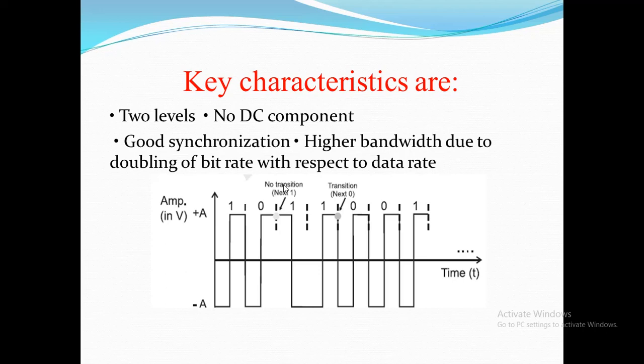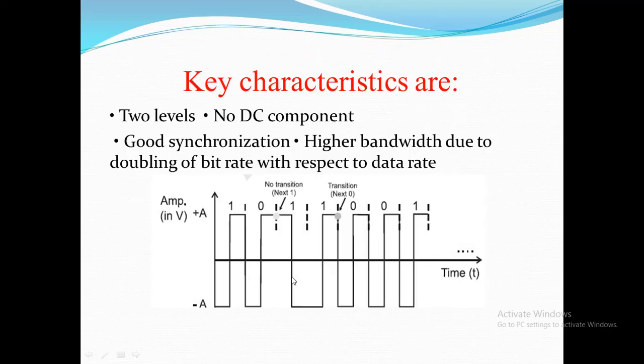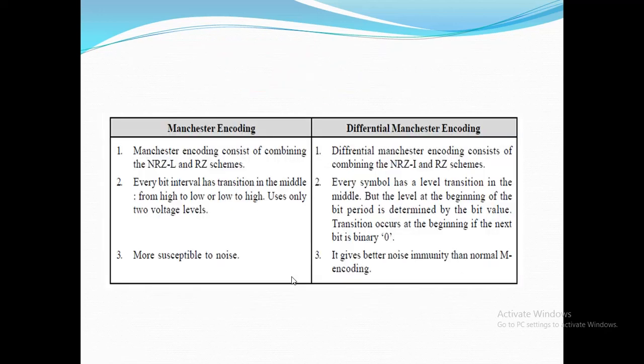Key characteristics of biphase encoding: two voltage levels are present, no DC component, good synchronization, but higher bandwidth is required due to doubling the bit rate with respect to the data rate. This is the main difference between Manchester encoding and Differential Manchester encoding.